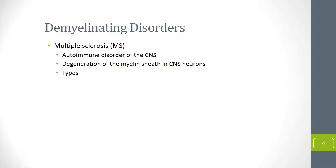Multiple sclerosis is a disease involving degeneration of the myelin sheath in the central nervous system. It is the most common cause of neurologic disability among young and middle-aged adults. The typical onset is between ages 20 and 45. There is a genetic component in multiple sclerosis, though there is no direct inheritance pattern.